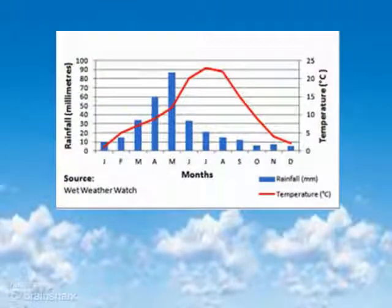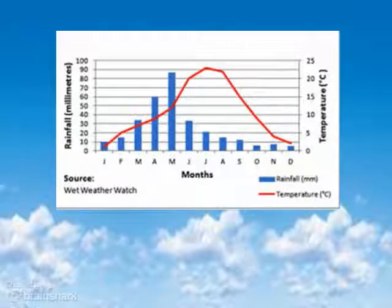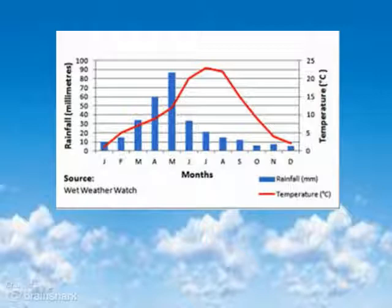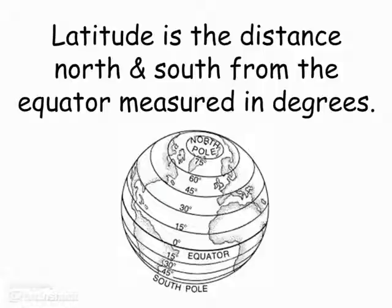Here's an example of a climate chart for an area. At the bottom, on the x-axis, are the months — January, February, all the way through December. The red line represents temperature, and the blue bars represent rainfall. These two things are what meteorologists look at when determining the climate of an area.